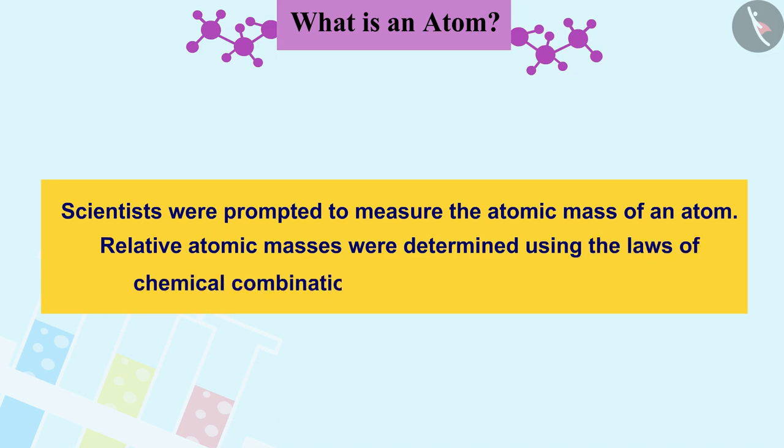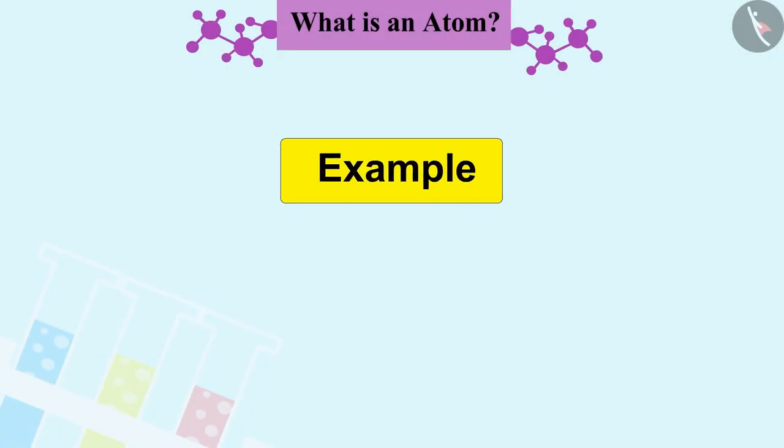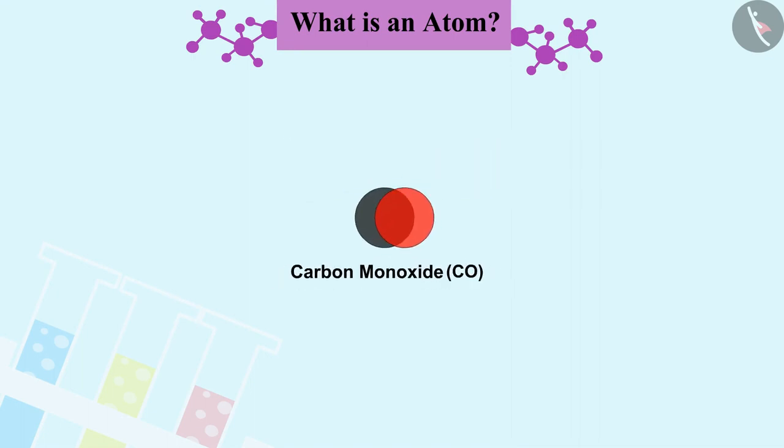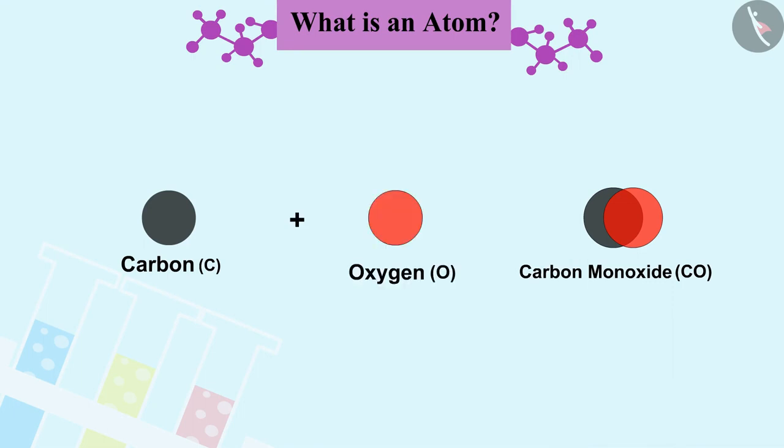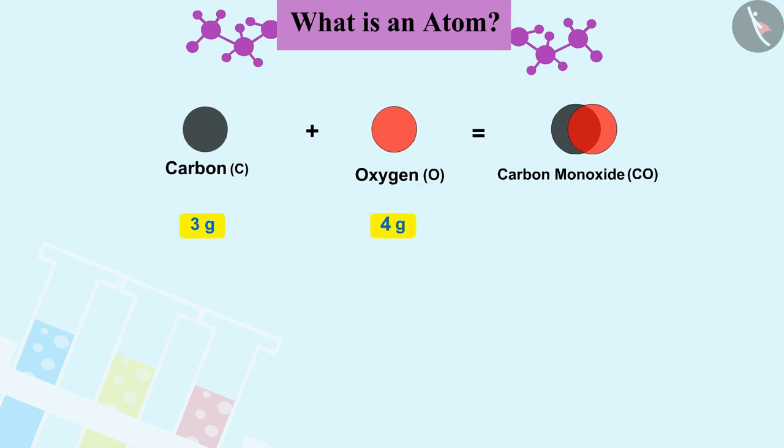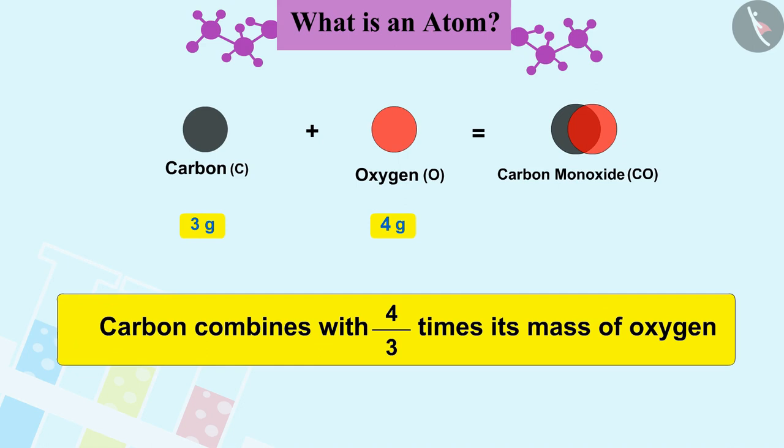Let us try to understand it by an example. Carbon monoxide, CO, is made up of carbon and oxygen. It is made by combining three grams of carbon and four grams of oxygen. In other words, we can say that carbon combined with four by three times its mass of oxygen.